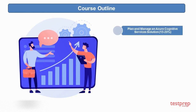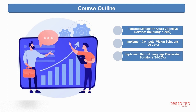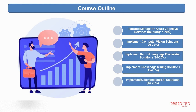Course outline. 1. Plan and manage an Azure Cognitive Services solution, which comprises 15-20% weightage in the exam. 2. Implement computer vision solutions, which comprises 20-25% weightage in the exam. 3. Implement natural language processing solutions, which comprises 20-25% weightage in the exam. 4. Implement knowledge mining solutions, which comprises 15-20% weightage in the exam. 5. Implement conversational AI solutions, which comprises 15-20% weightage in the exam. For detailed information you can refer to test prep training.